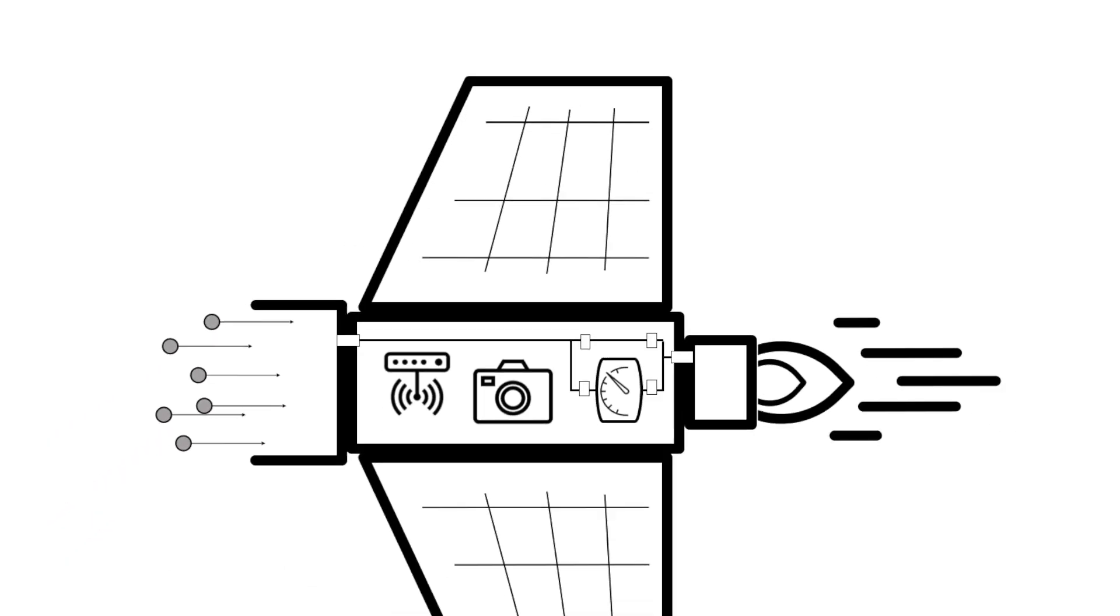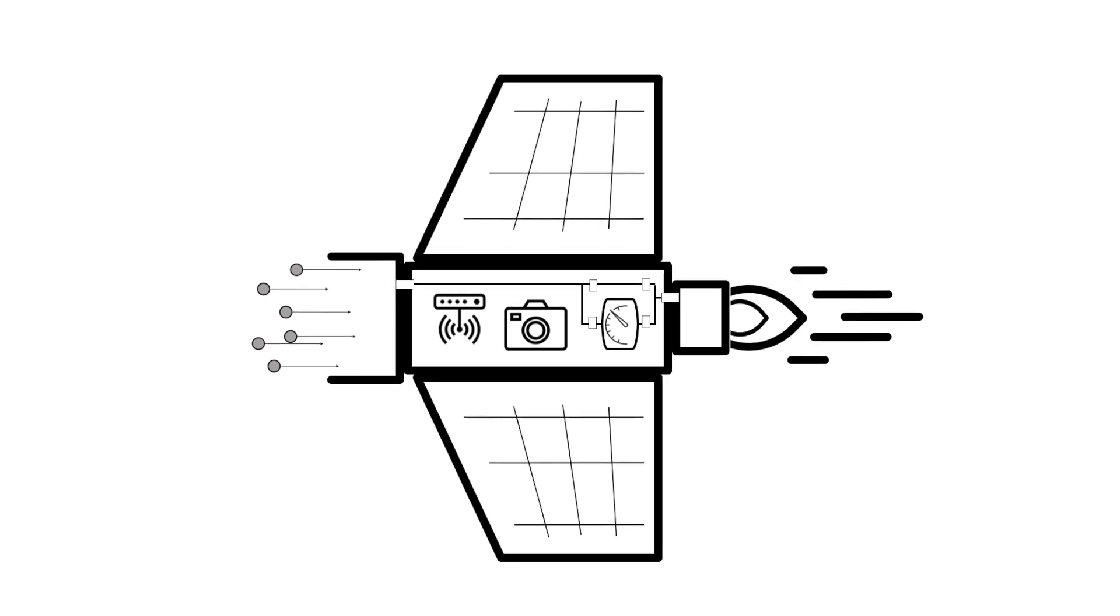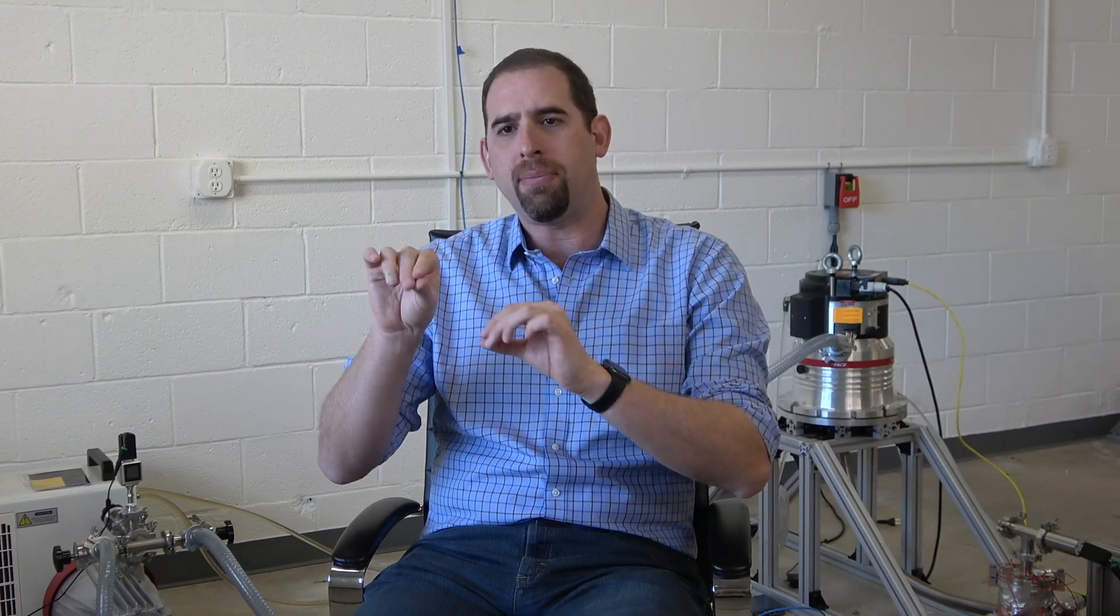We put together our model of the system, which was the holistic model that said okay, the solar panels, collection, the thruster—putting that all together and figuring out which parts needed to be optimized and where.